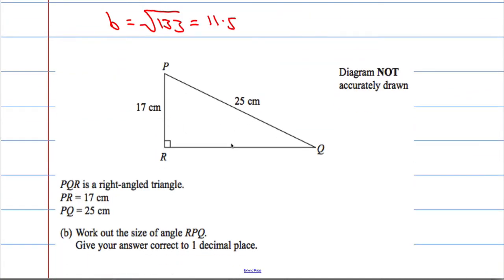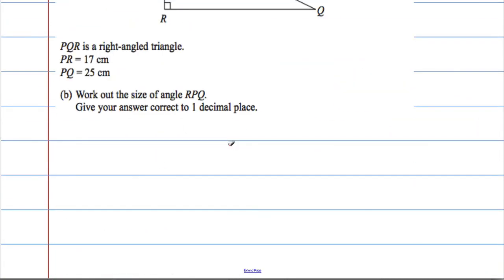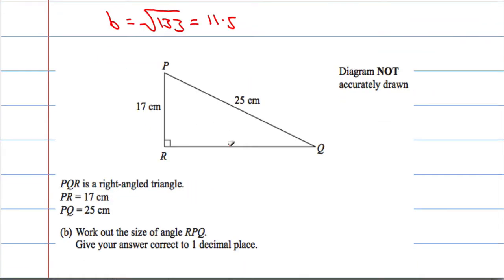Second part. Another triangle, PQR, is right angled also. PR is 17, PQ is 25. We're asked to work out the size of the angle RPQ, which is this angle in here. I'm going to call it angle X.